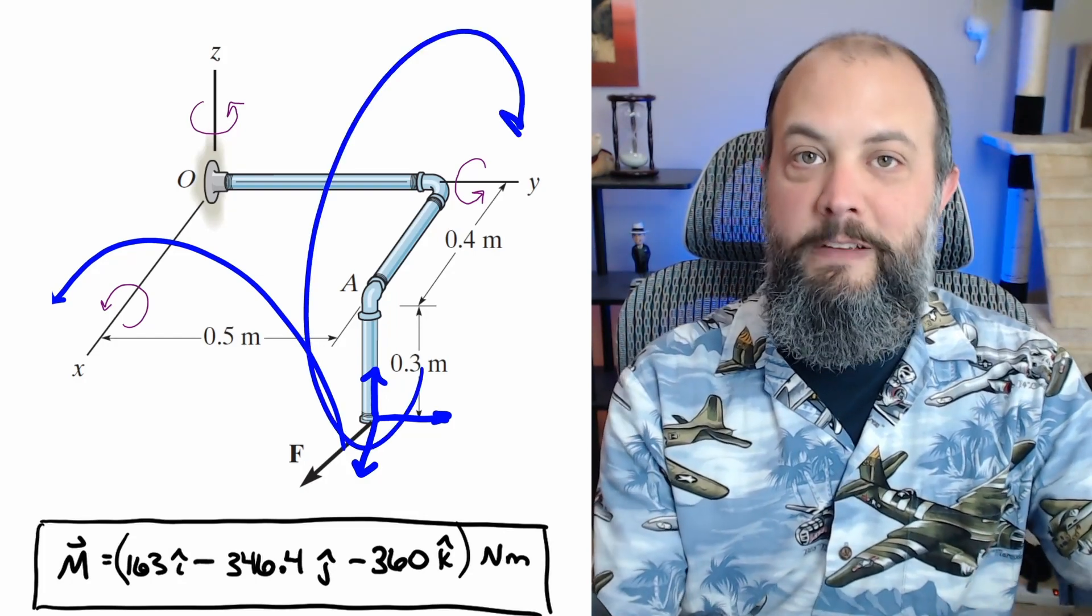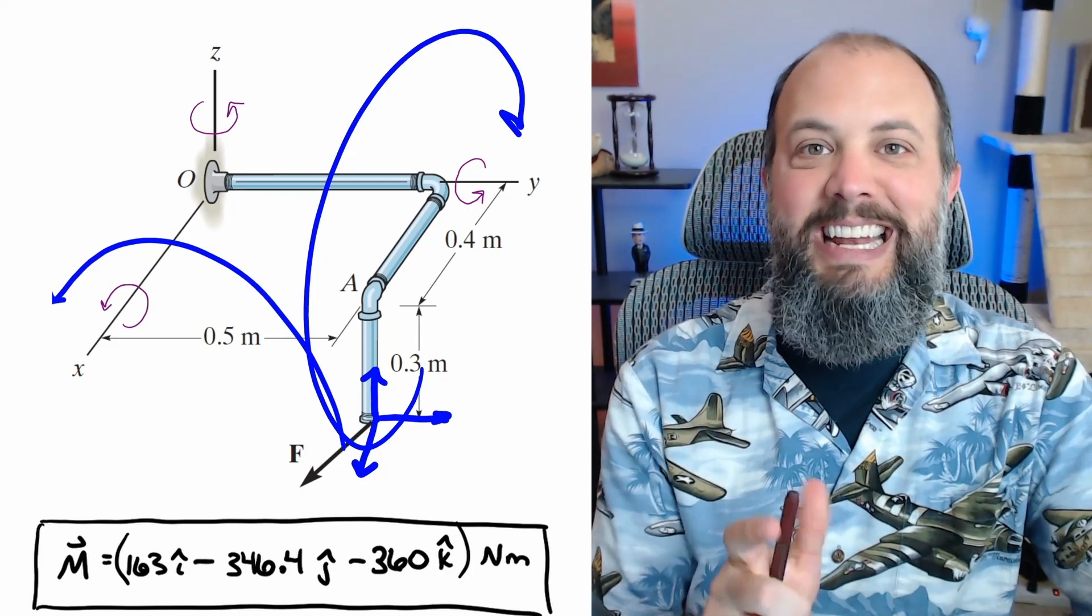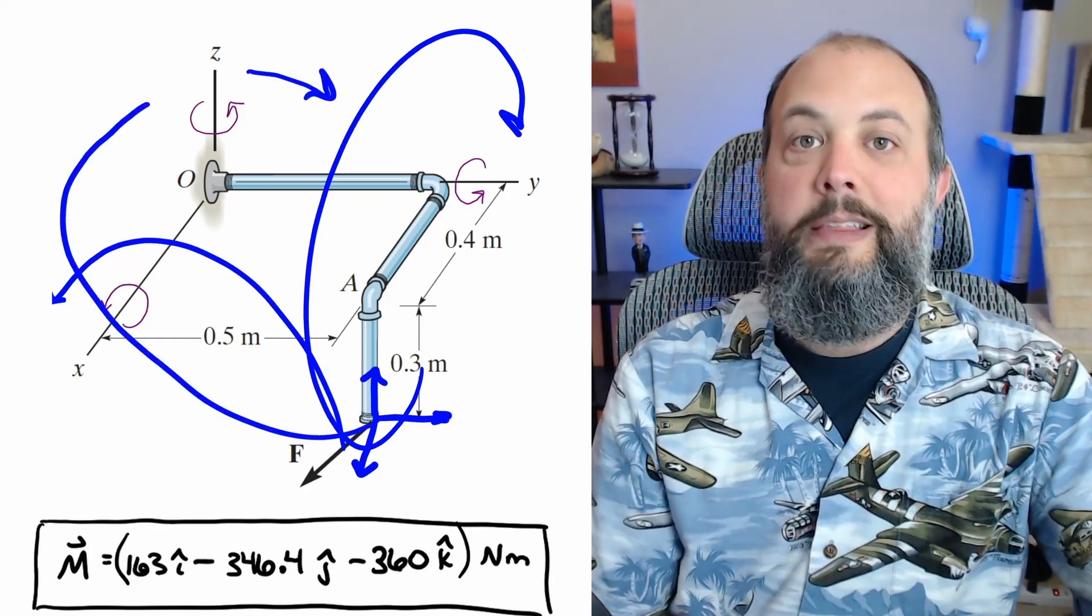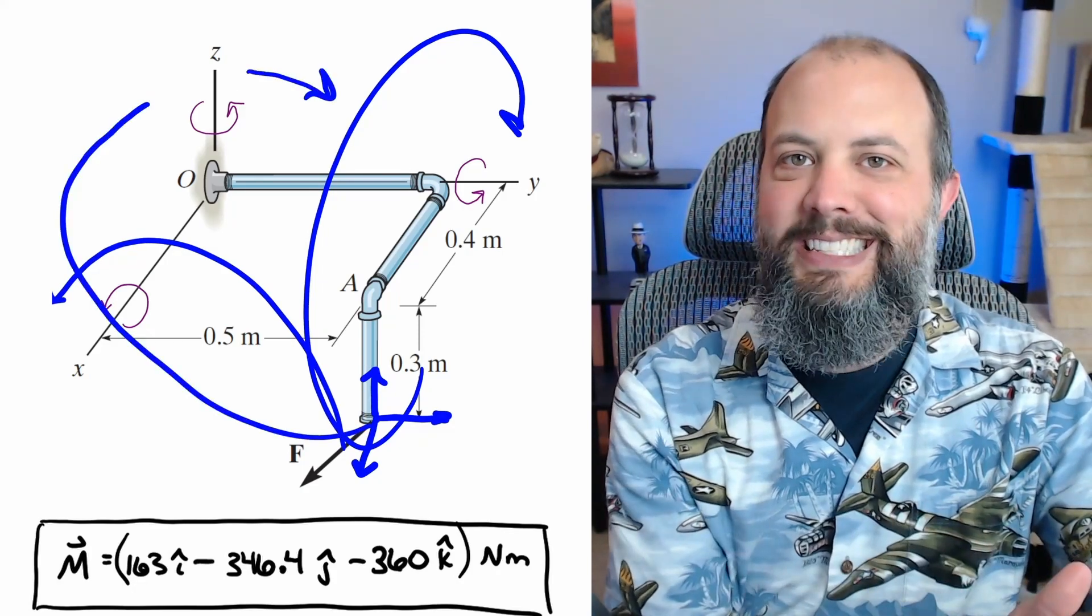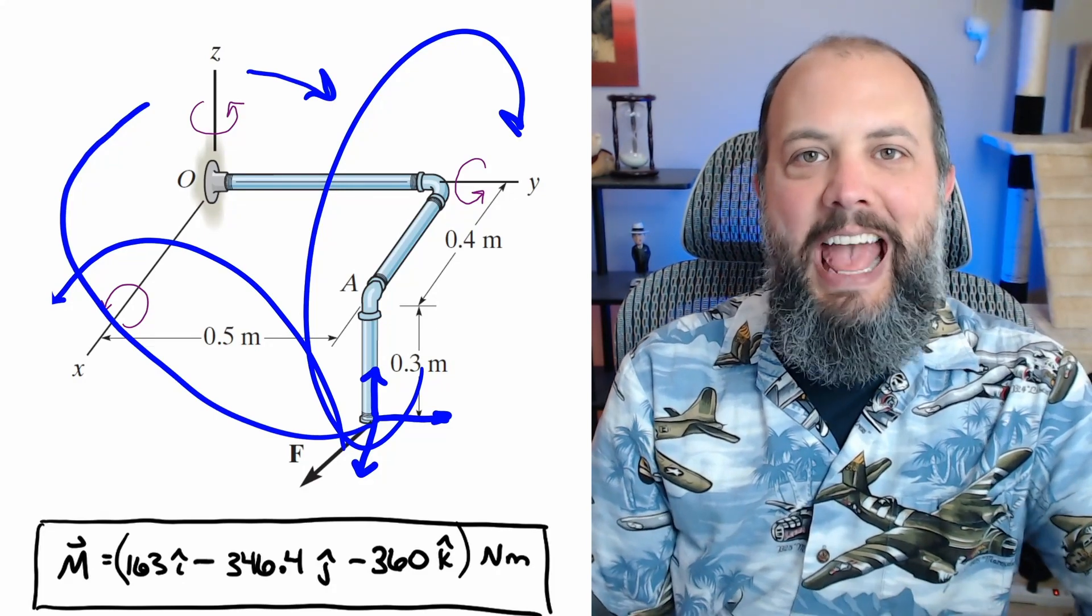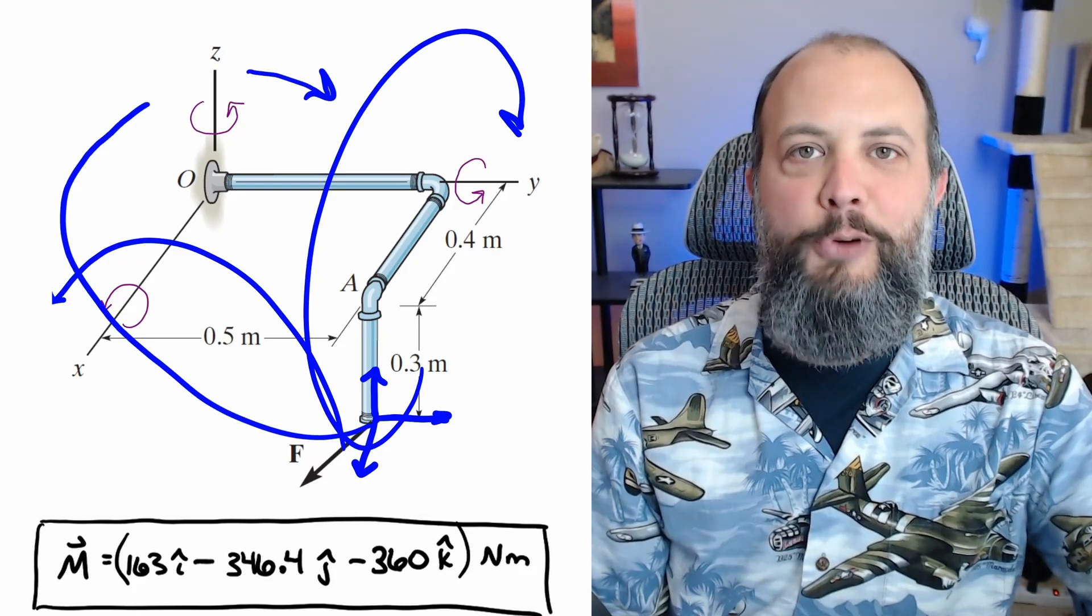Because f is pointing forward out of the page, it's going to come backwards over the y axis, which is going to be the negative y direction. And then again, since f is coming forward out of the page, it's going to wrap around behind the z axis going to the right, which is the negative z direction. So it looks like the final answer at least does have the correct sign for all three terms.